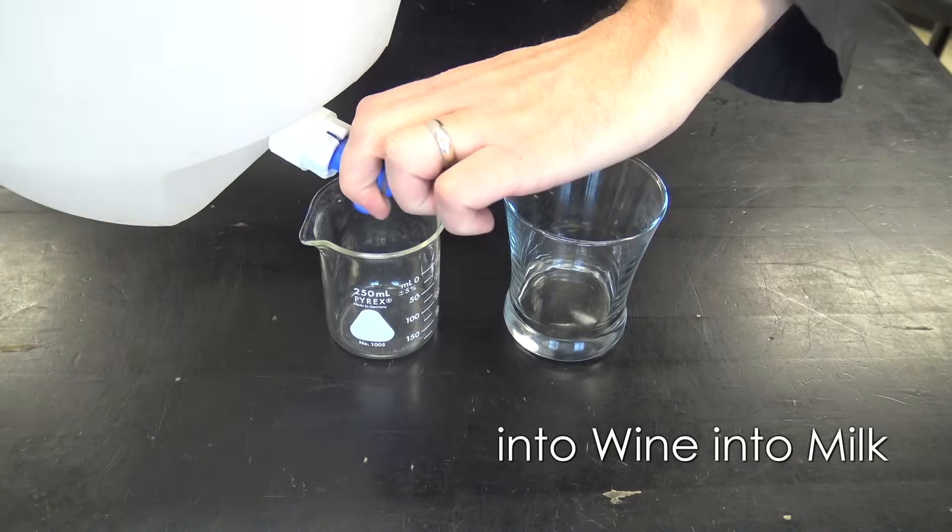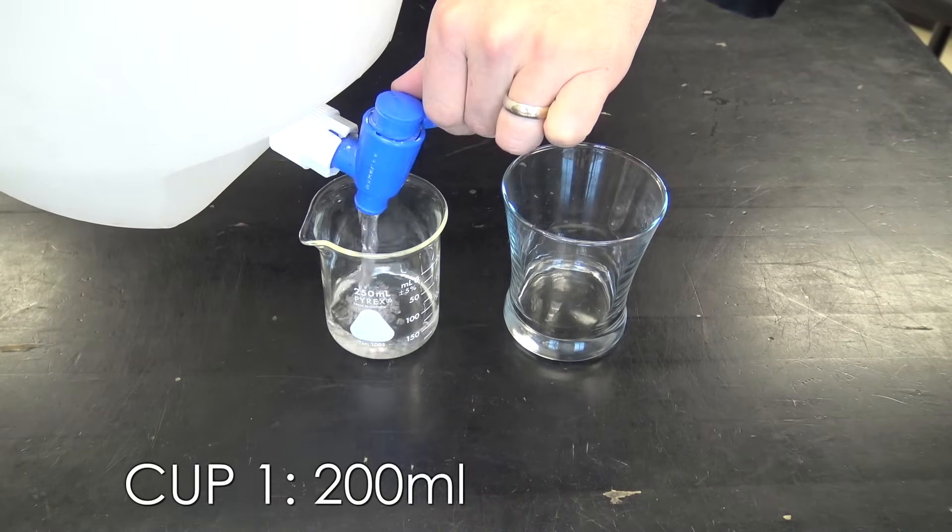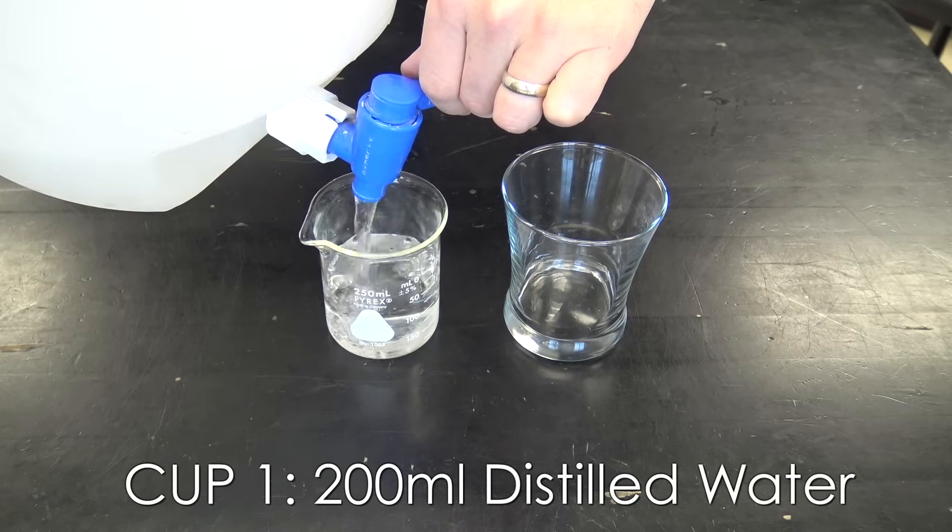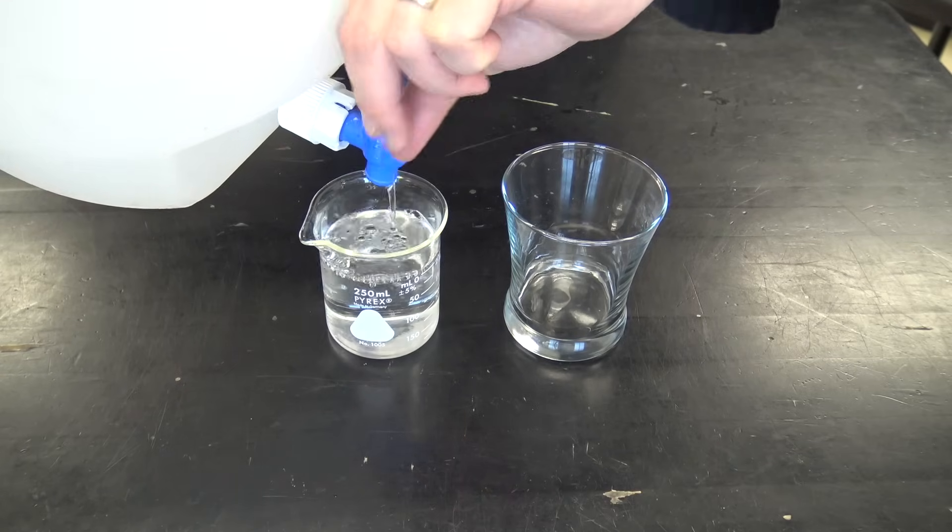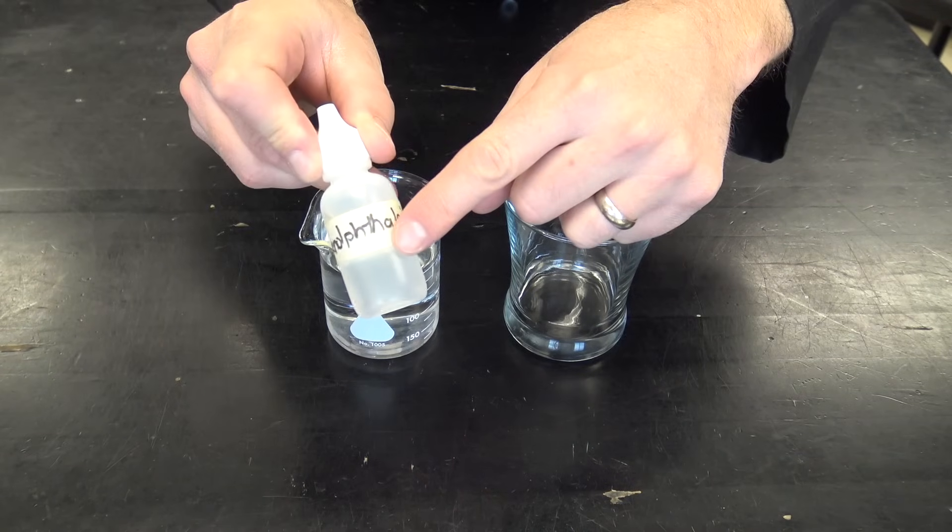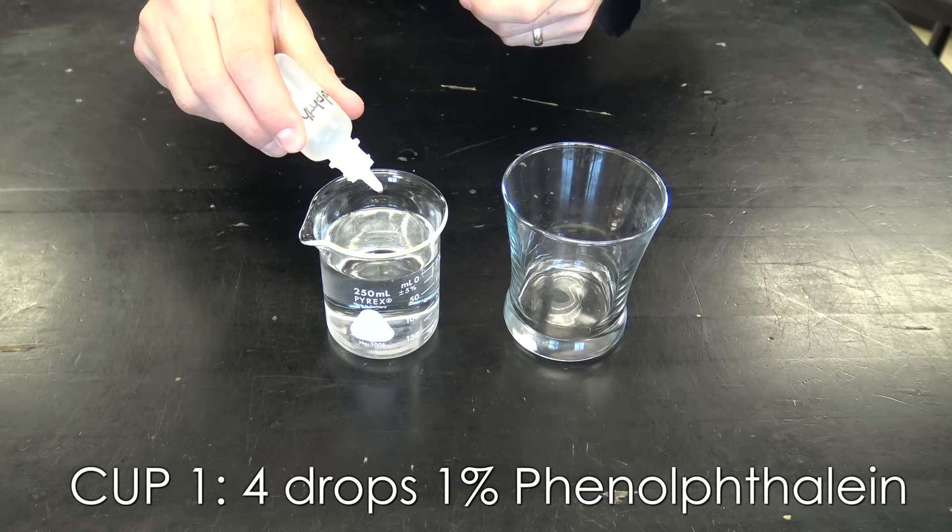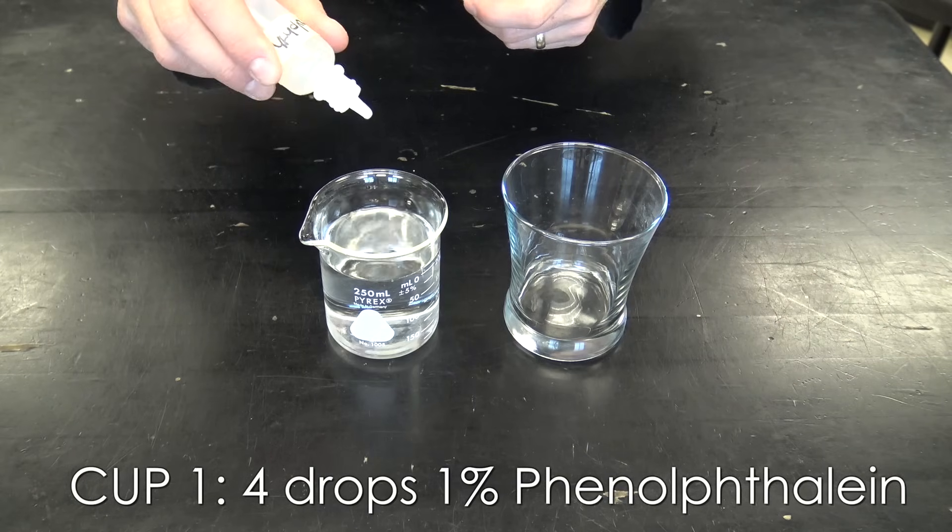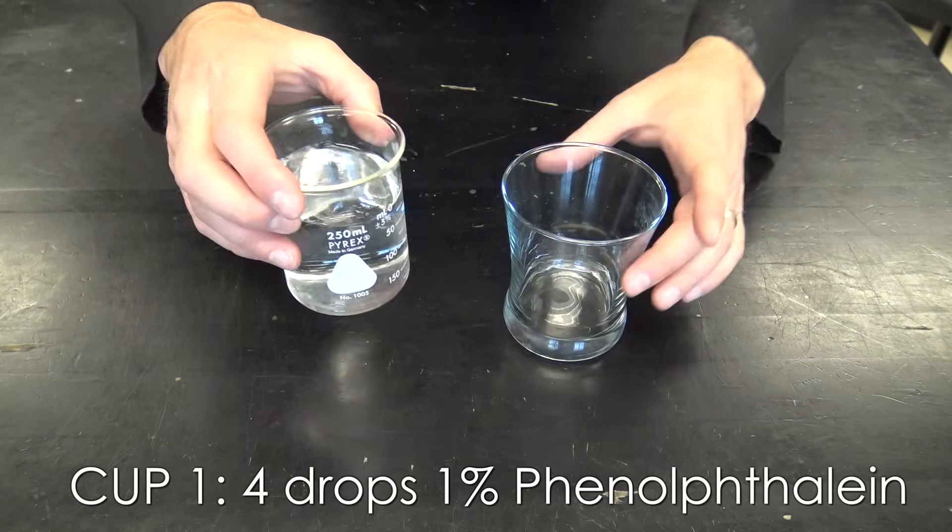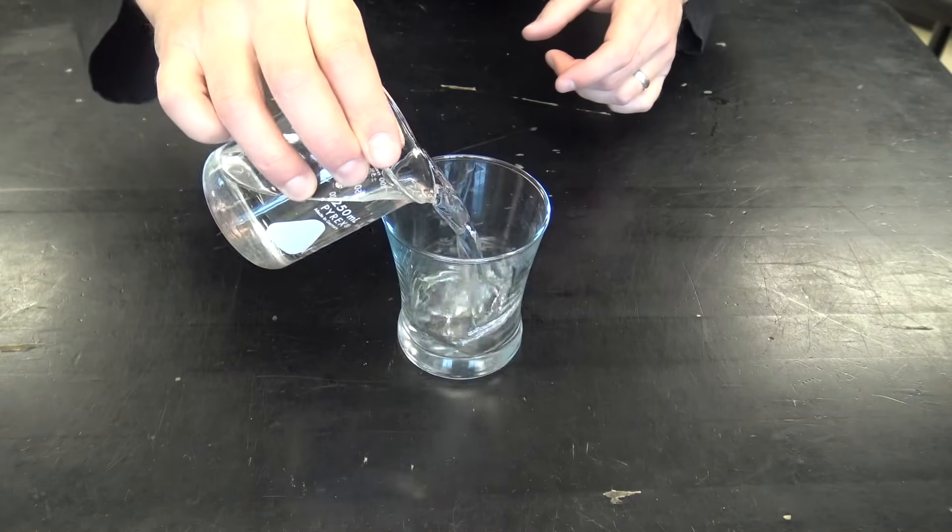Well, if you're still here watching the video, I guess you want to know how to do this. So here we go. We're going to start off with 200 milliliters of distilled water in cup number one, but we need to add some phenolphthalein solution to that. We're going to use about four drops, doesn't need to be exact, and then add it to our first cup.